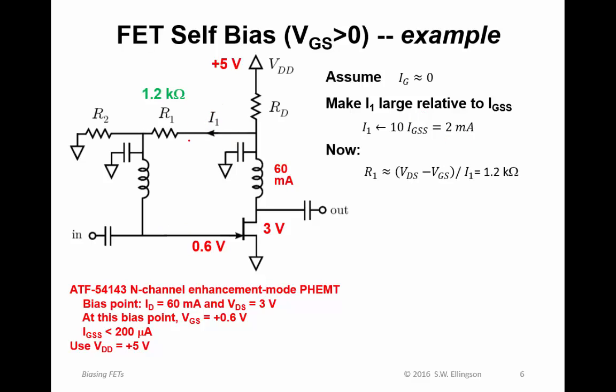Now we see that R1 is given by V_DS minus V_GS divided by I1, which gives us 1.2 kilohms. Because the difference here is the drop across this resistor. So right away we have 1.2 kilohms as the value of this bias resistor. R2 then is simply V_GS divided by I1, because that's the voltage drop across this resistor. From that calculation we get 300 ohms. So very quickly we have 1.2 kilohms for R1 and 300 ohms for R2.